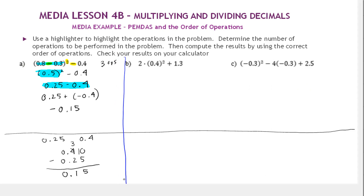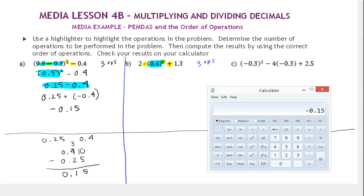For Problem B, the operations are multiplication, an exponent, and addition — three operations. The exponent comes first in the order of operations. We need to square 0.4, which is 0.4 times 0.4. That equals 0.16.